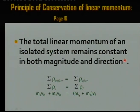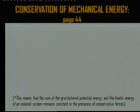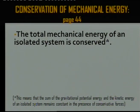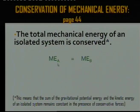The second principle you have to know is the conservation of mechanical energy, found on page 44 in your book. The principle states: the total mechanical energy of an isolated system is conserved. The sum of the gravitational potential energy and the kinetic energy in an isolated system remains constant as long as there are conservative forces like gravity. Mechanically, we say the total mechanical energy at point A must equal the total mechanical energy at point B.